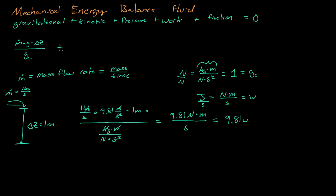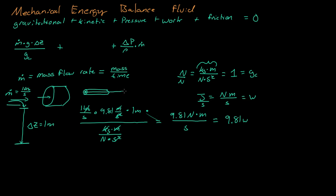Now let's jump to pressure. Pressure energy is calculated by the change in pressure divided by the density of the substance, times the mass flow rate. Note that mass flow rate doesn't tell you how fast the fluid is moving — it tells you how much fluid is moving. A large pipe and a small pipe with the same mass flow rate will have very different fluid velocities; the small tube's velocity must be much greater.